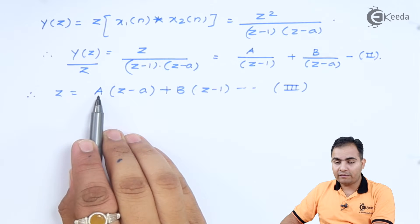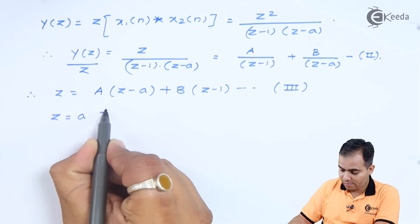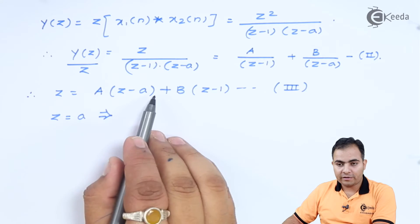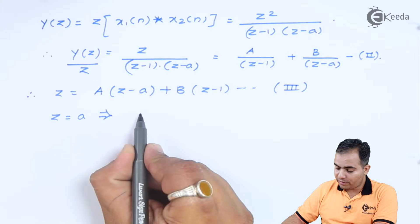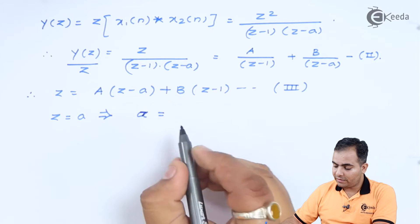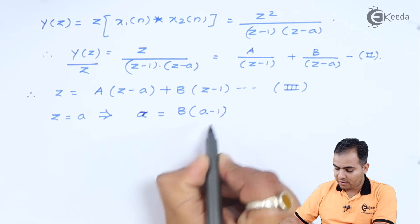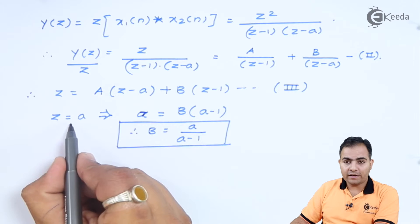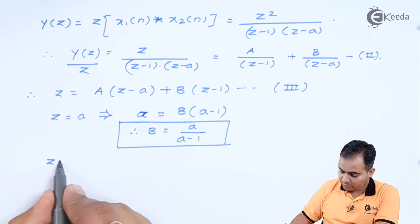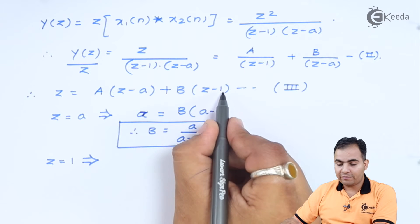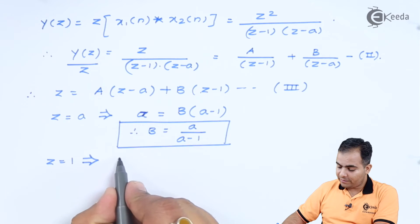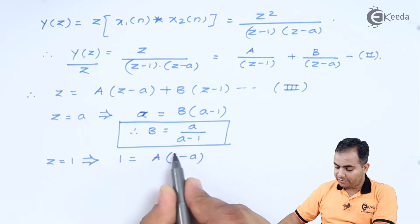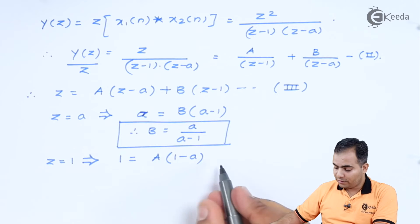We substitute different values of z to find constants A and B. Substituting z = a: a = B(a − 1), so B = a / (a − 1). Substituting z = 1: 1 = A(1 − a), so A = 1 / (1 − a).